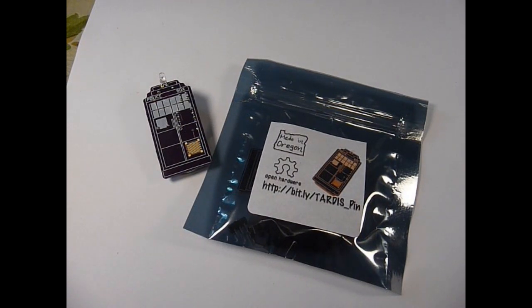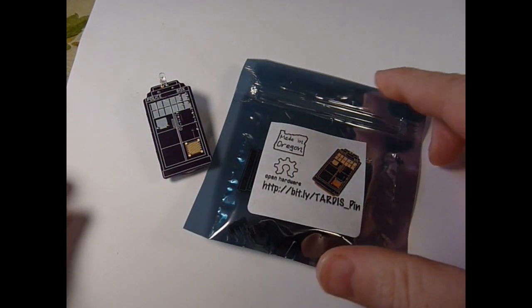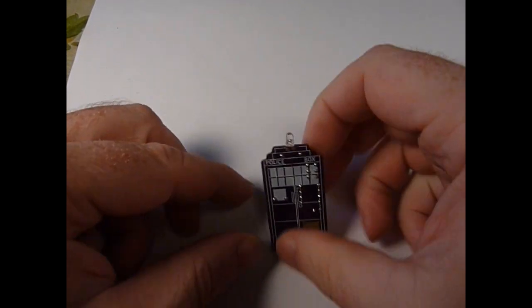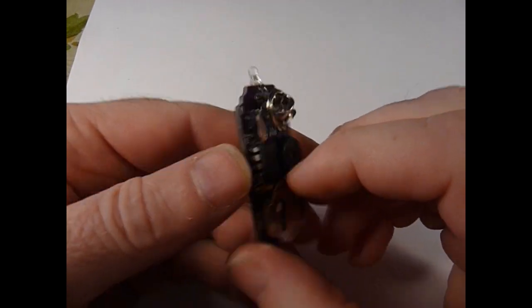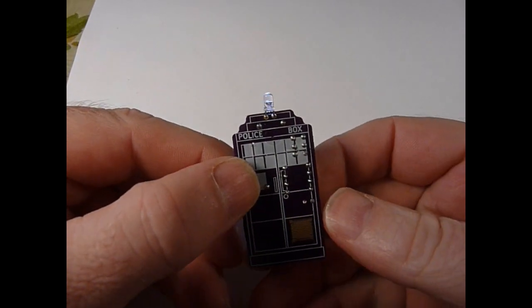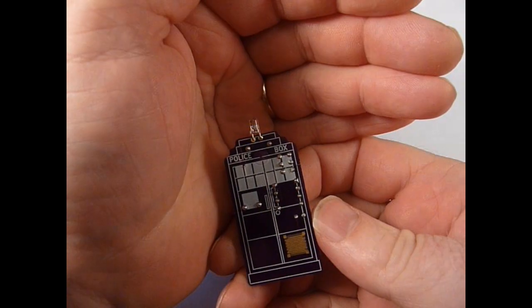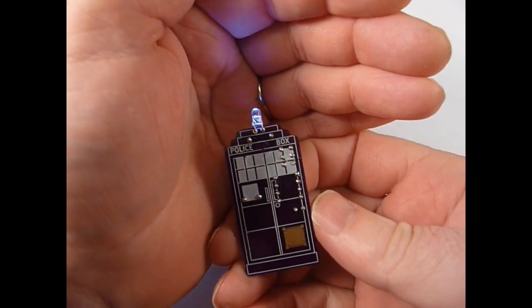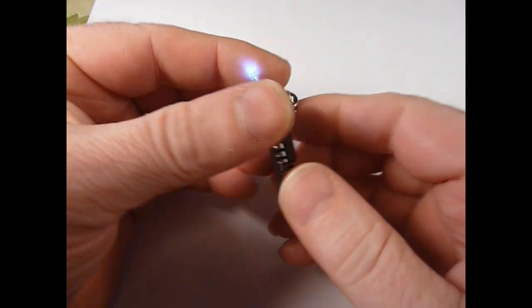Hey, this is Ken from MakersBox. Today I want to show you how to make the TARDIS kit. I've been working on this one for a while. It's basically a lapel pin. Press the button and you can see the light fades in and out like your TARDIS is landing.